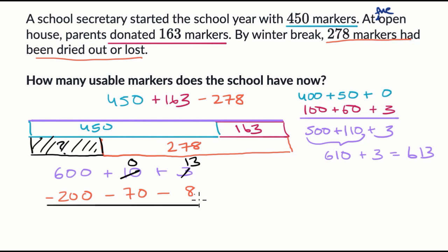Now we have a problem in the 10s place. We have no 10s and we want to subtract 70. So let's take 100 from the 100s place. If we take 100, this becomes 500. And we put that 100 over here. This becomes 100. And I get 100 minus 70 is 30. And then I have 500 minus 200 is 300. So 300 plus 30 plus five, which is 335. So that's how many usable markers the school now has. 335.